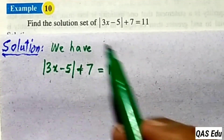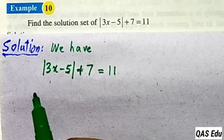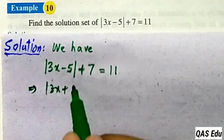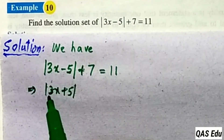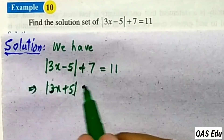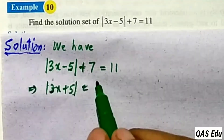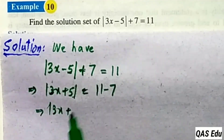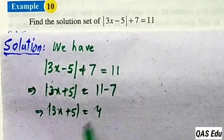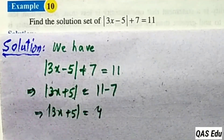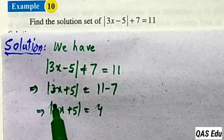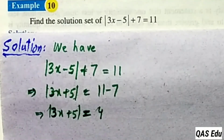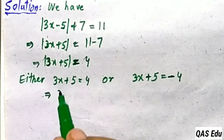Example 10: another absolute value equation. The term is absolute value of 3x plus 5. We isolate the absolute value by moving plus 7 to the right as minus 7: 11 minus 7 gives 4.